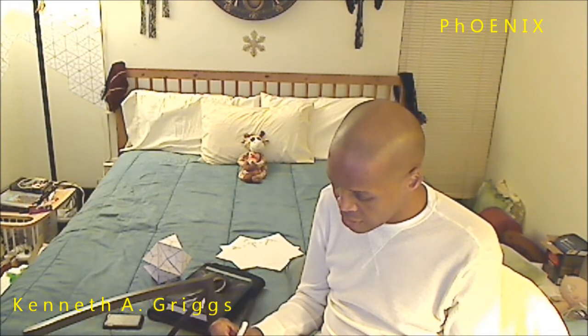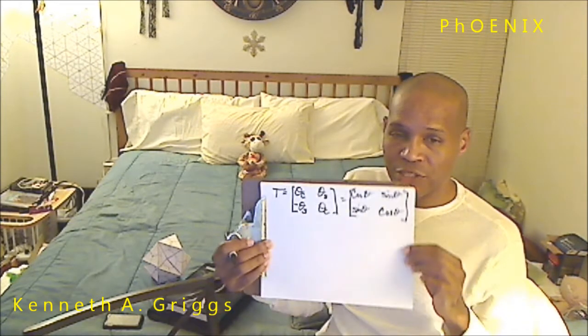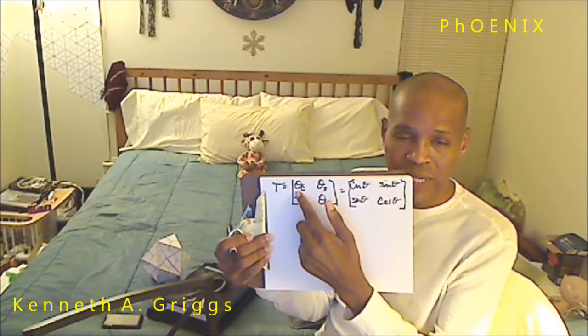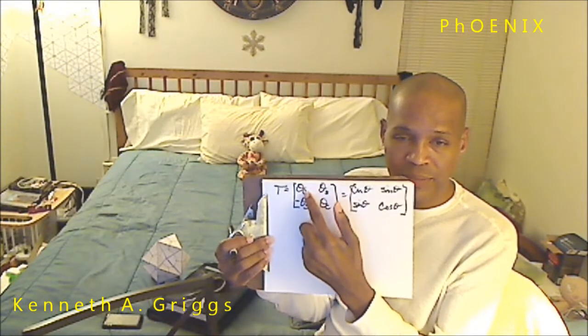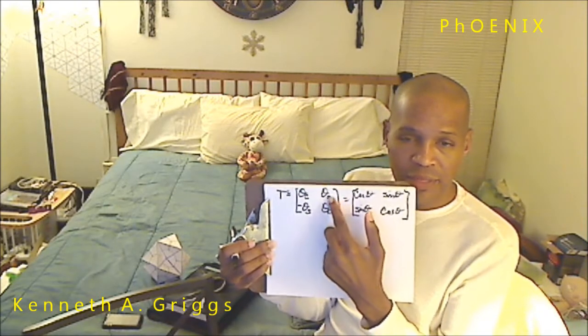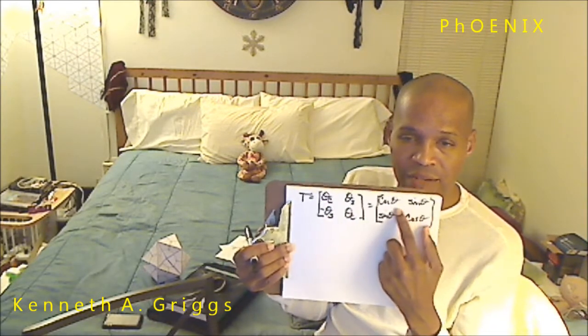I just want to show you this because it'll make your life easier when you're dealing with sines and cosines — just use this shorthand so that you don't have to be befuddled writing sines and cosines all over the place. So theta sub c is the cosine of theta, and theta sub s is the sine of theta.